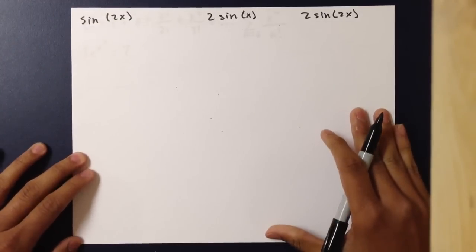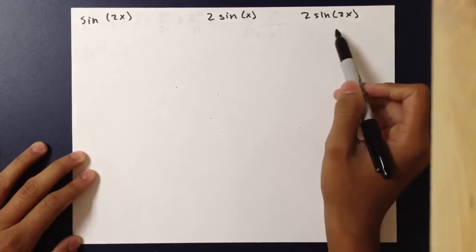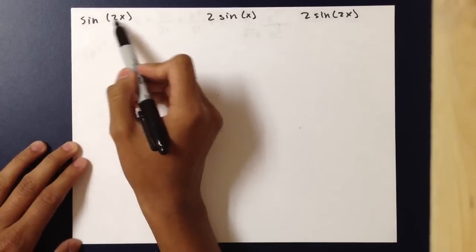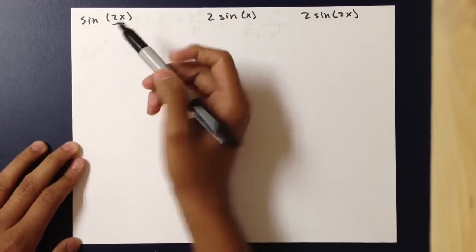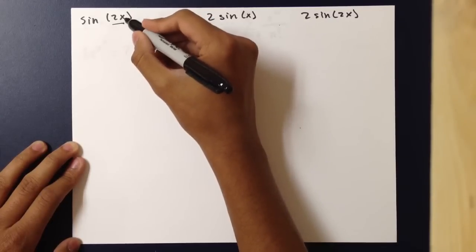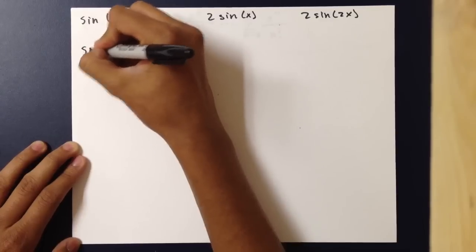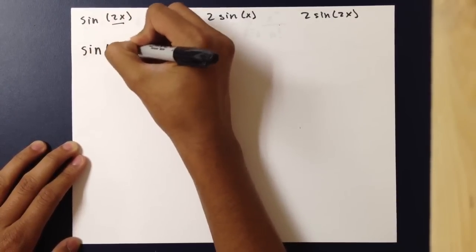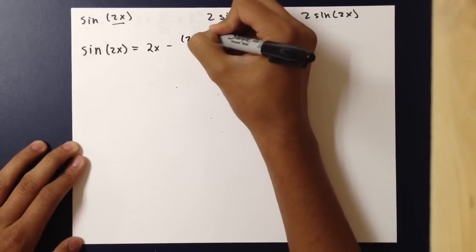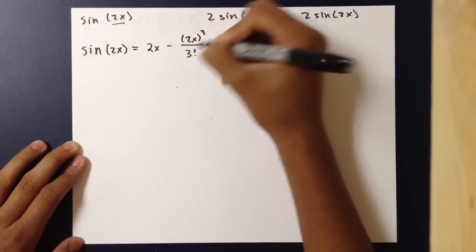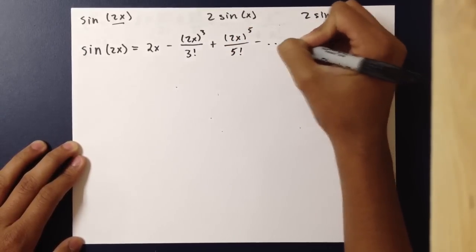They can also ask you to perform general operations on each type of Taylor polynomial. Let's start with sine of 2x, where x is being multiplied by 2. All we do is replace x with 2x wherever x appears in the Taylor polynomial. So sine of 2x would simply be 2x minus 2x cubed over 3 factorial, plus 2x to the fifth over 5 factorial, and so on.